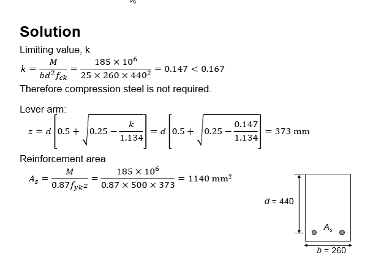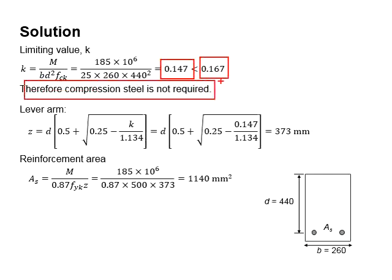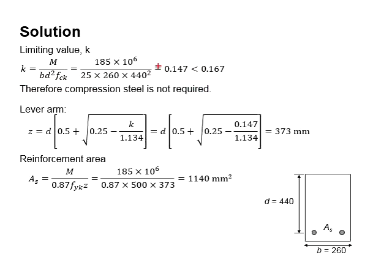The value is less than 0.167, therefore compression steel bar is not required. Next, substitute the value k into the equations for the lever arm.